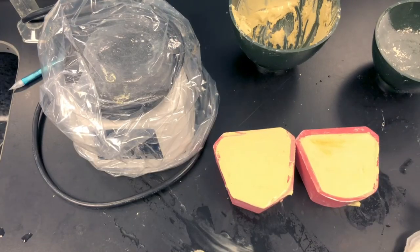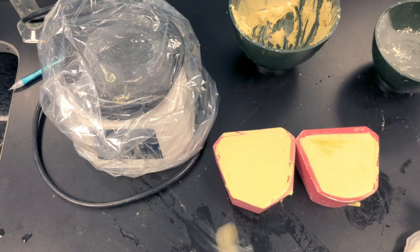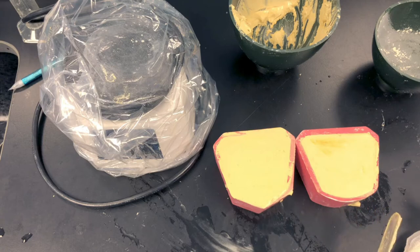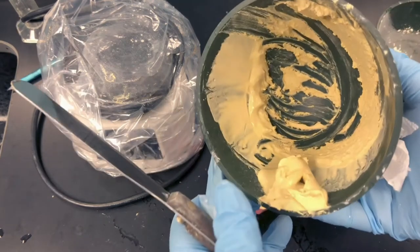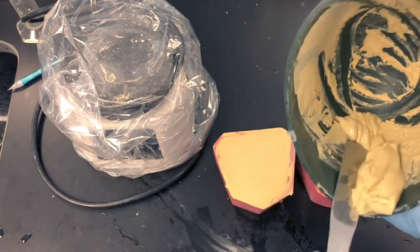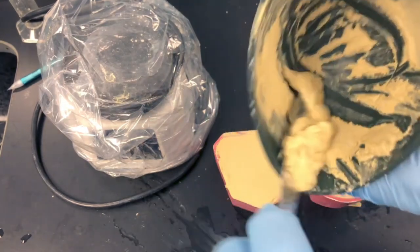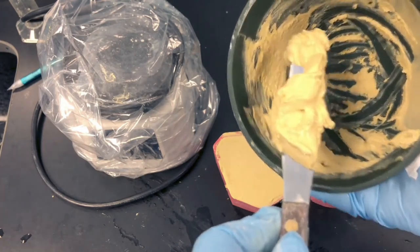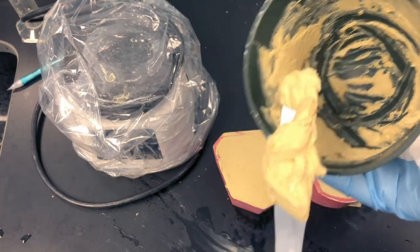And there I have both of my impressions poured up. Once enough time has passed, I will take them out of the molds and we can see how they look. Remember to take your extra stone and throw it away. Don't let it go down the water drain. Regular trash, and then rinse it out in a sink with a plaster trap. All right.